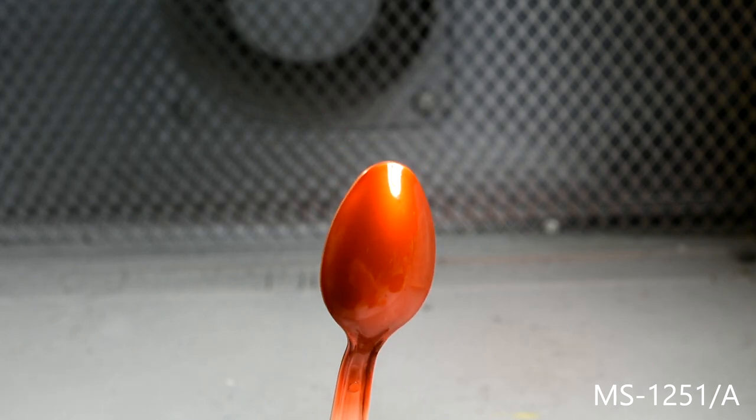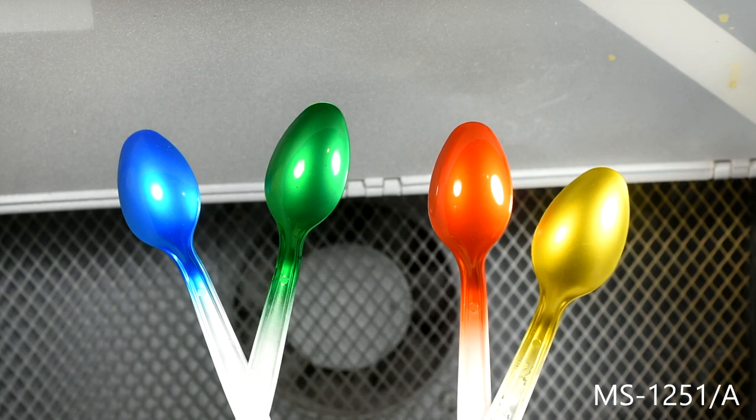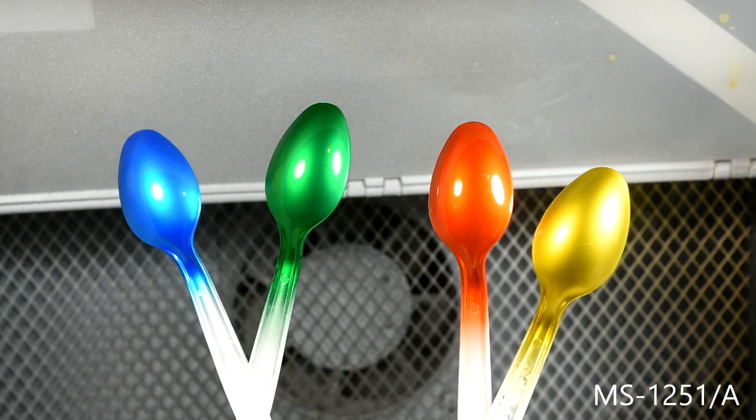I went ahead and sprayed some more colors off camera and here's how they all turned out. Since it took 10 layers of the clear red to achieve the color I desired, I also decided to lay down 10 layers of paint using the same method for each of the colors shown.